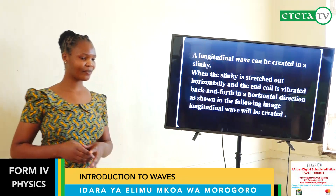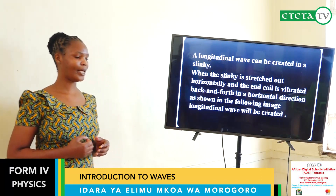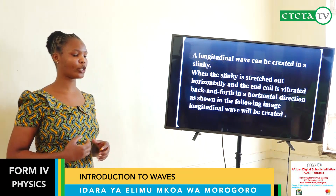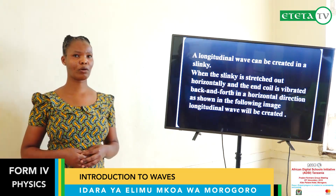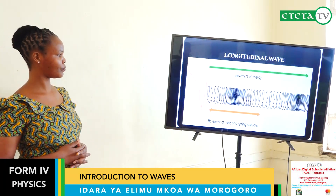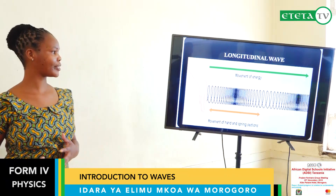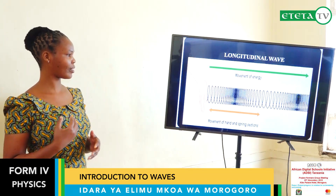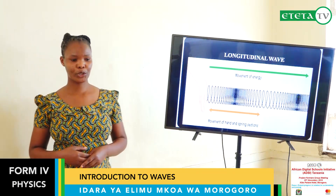A longitudinal wave can be created using a slinky. When you pull a slinky, you cause vibrations which move back and forth in a horizontal direction. That kind of vibration produces a longitudinal wave, as shown in the image.